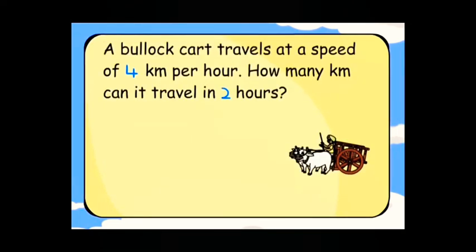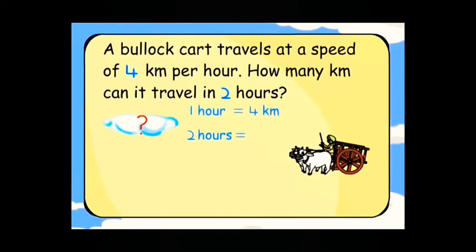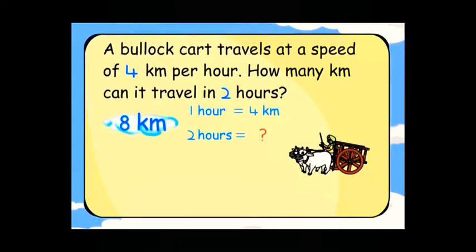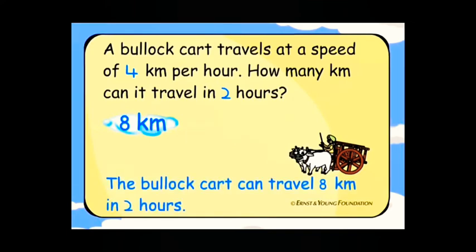A bullock cart travels at a speed of four kilometres per hour. How many kilometres can it travel in two hours? One hour is equal to four kilometres. Two hours is equal to eight kilometres — two into four, that is eight. The bullock cart can travel eight kilometres in two hours.